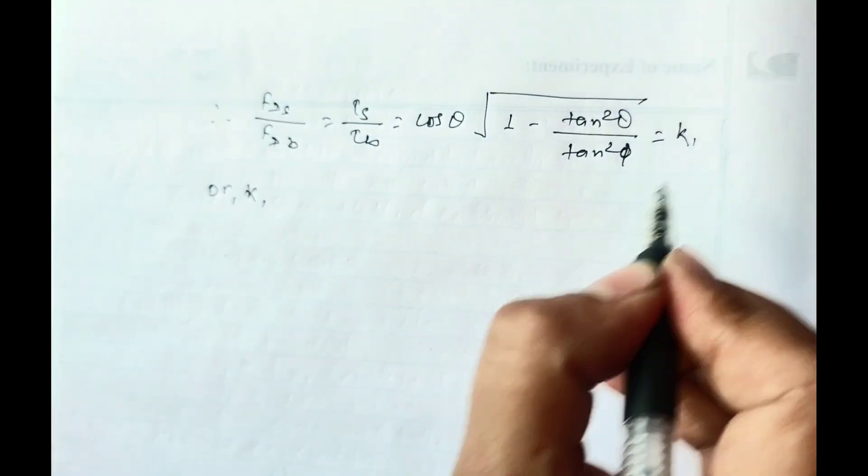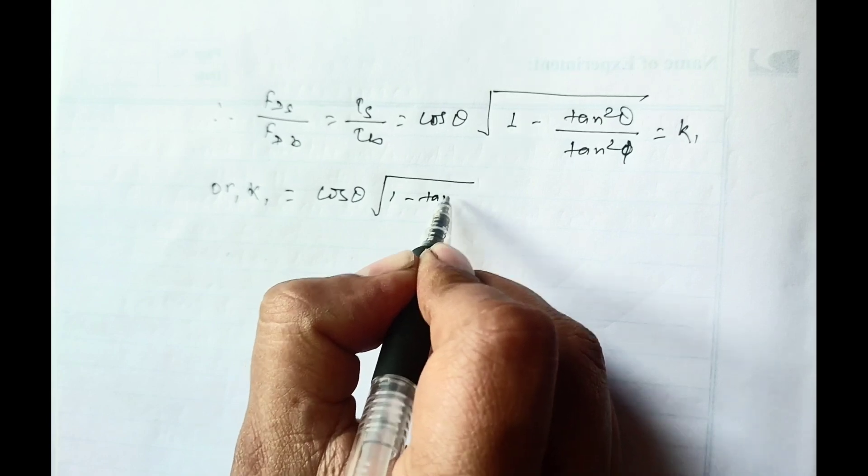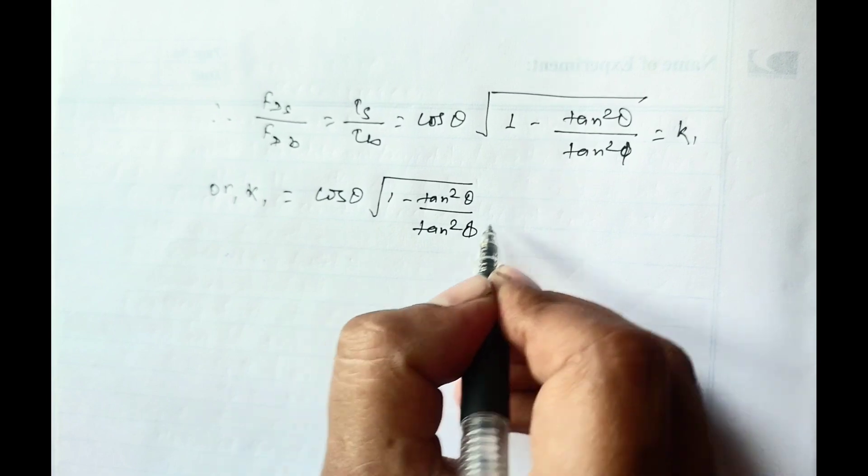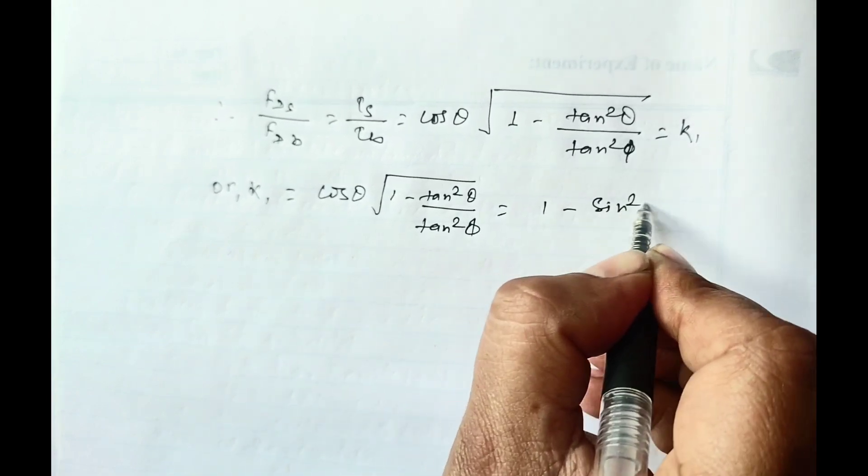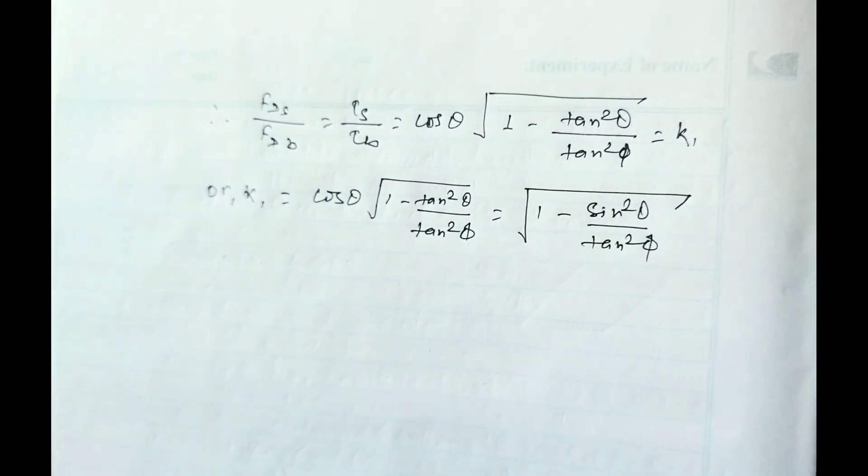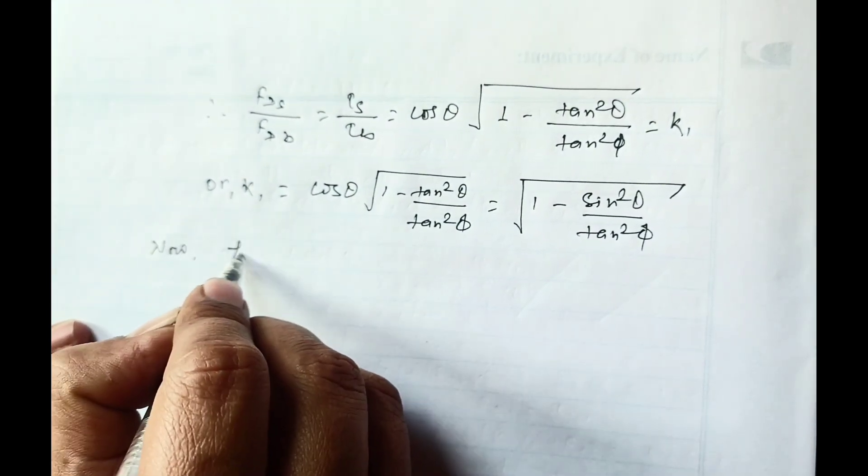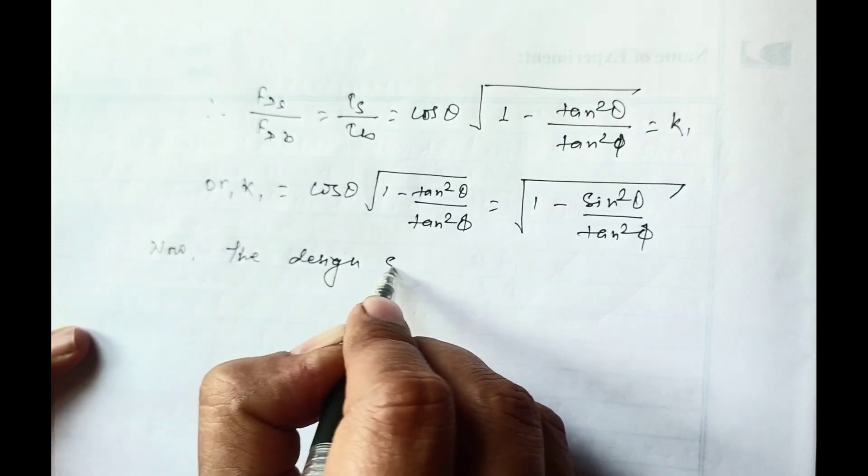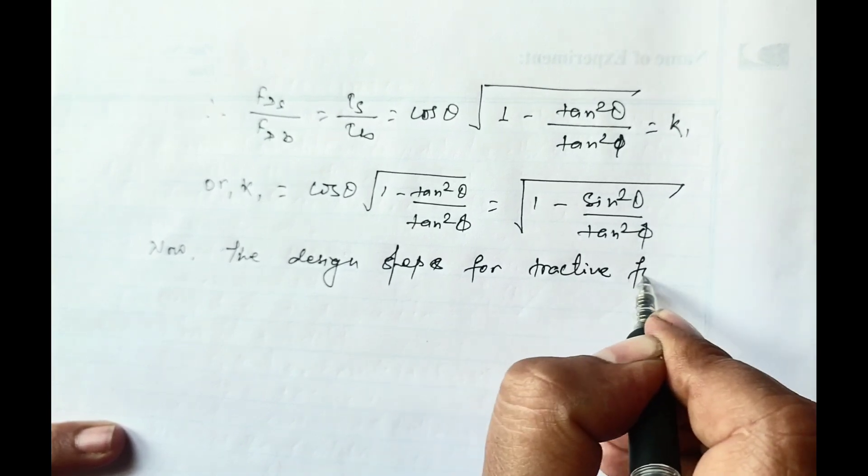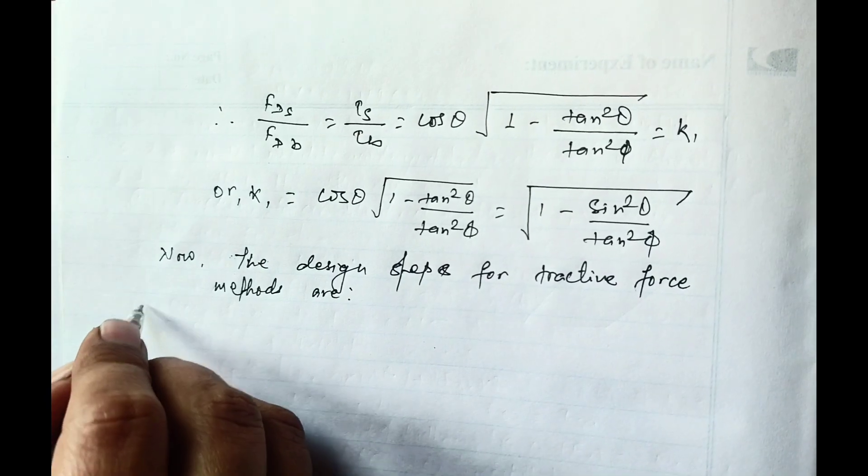Or K equals cos theta root over one minus tan squared theta divided by tan squared phi, which equals the square root of one minus sine squared theta divided by sine squared phi. This is the required expression for K.